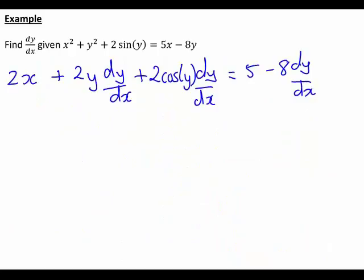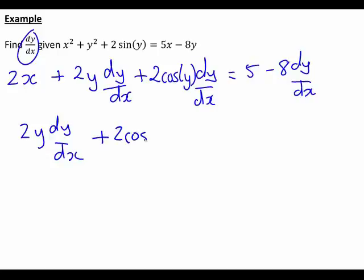Now, what are we actually looking to find? We're wanting to find dy/dx. What we have now is a series of terms, some that involve dy/dx and some that do not. So we need to rearrange this equation so that all terms containing dy/dx are on one side — I find it easiest to put them on the left — and everything else is on the right. We already have some dy/dx terms on the left, so we rewrite those. On the right we had 5 − 8·dy/dx, so we add 8·dy/dx to both sides so that it appears on the left.